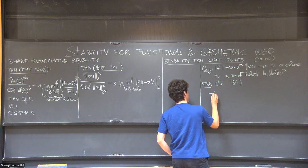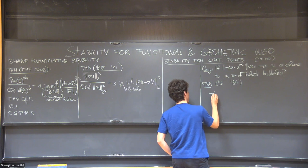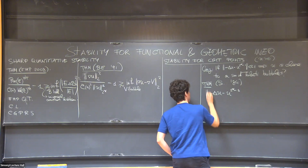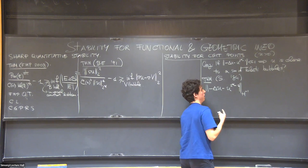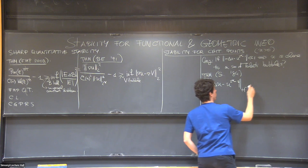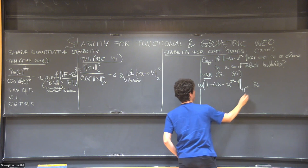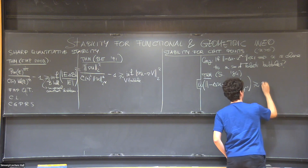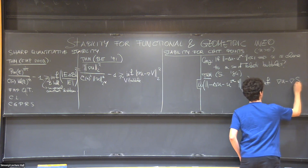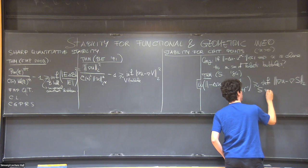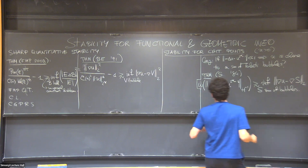And what you get is that, if this quantity... And here, the natural norm to consider is H minus one, because you are taking the norm of a differential. If this is small, non-quantitatively, so here you have to put a modulus of continuity, then this controls the distance between u and the sum of Talenti bubbles. And this is purely qualitative obtained by compactness.